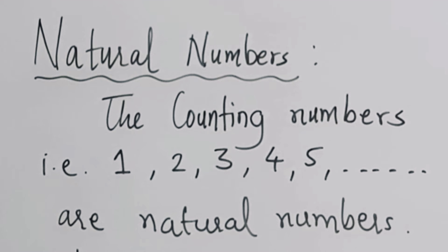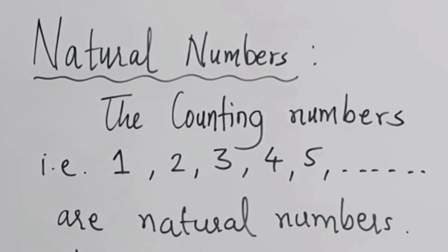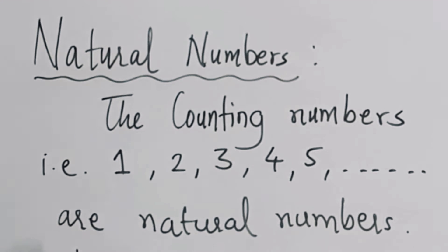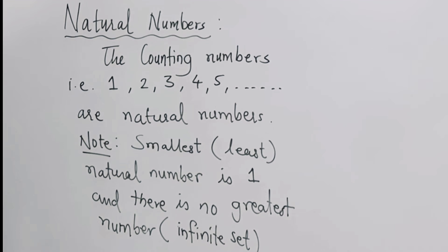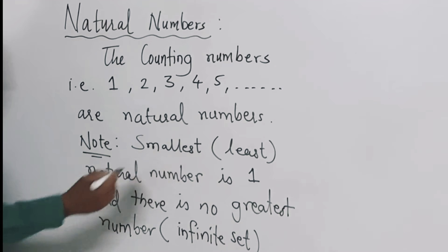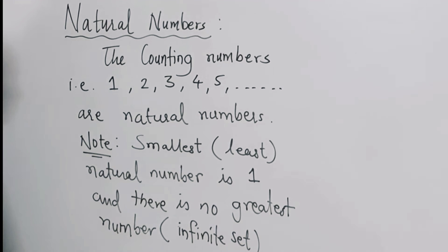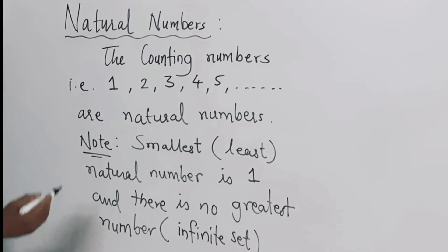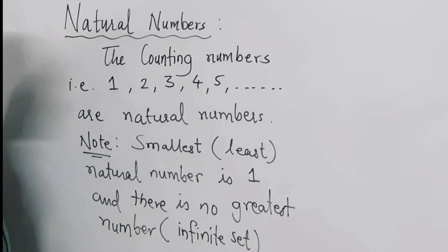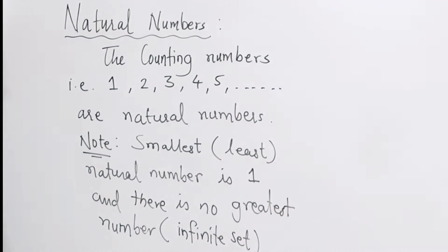Natural numbers are the counting numbers. We usually start counting from 1, so 1, 2, 3, 4 and so on are natural numbers. Note that the smallest natural number is 1 and there is no greatest natural number, so the set of natural numbers is an infinite set.